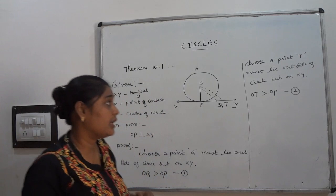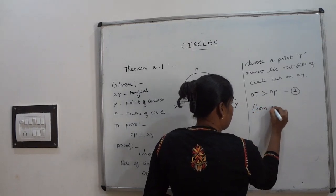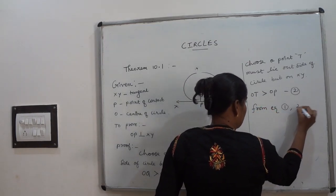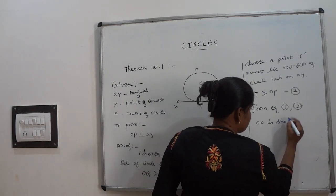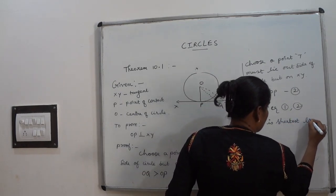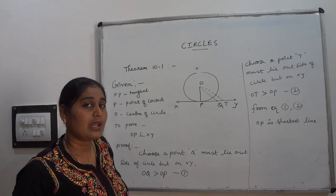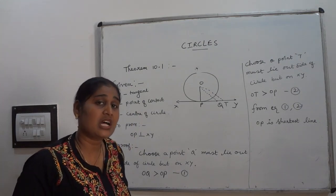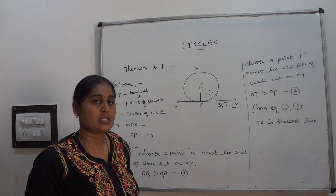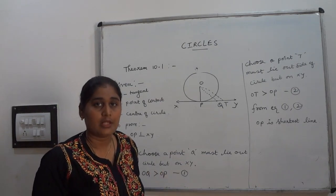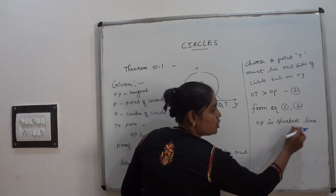From these two equations — equation 1 and equation 2 — I can conclude that OP is the shortest distance, the shortest line segment from O to line XY.